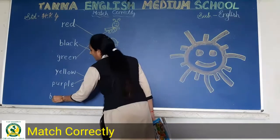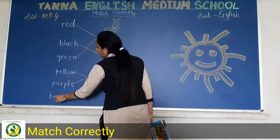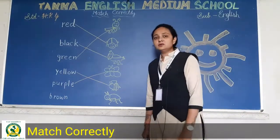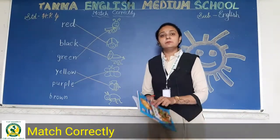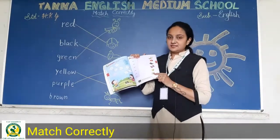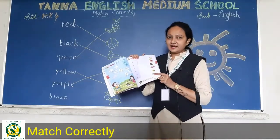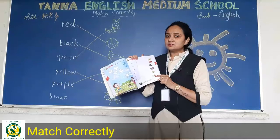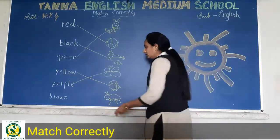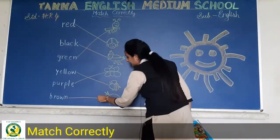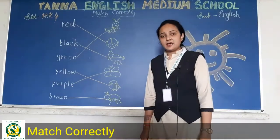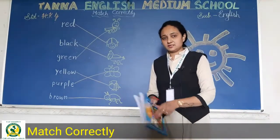Now see here — B-R-O-W-N, brown. Toh yaha pe brown color ka — this ant — yeh ant hai, woh brown color ki hai. Toh hum yeh ant ko brown color ke saath match karayenge. Have you done with me? Okay students.